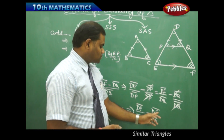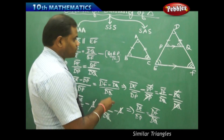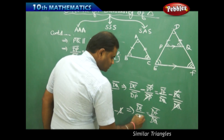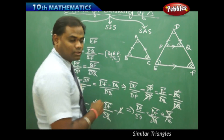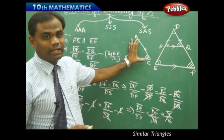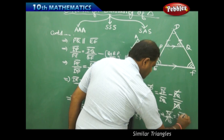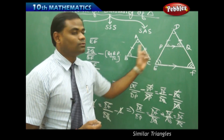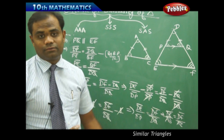Since DE/DP = DF/DQ, and we know DP equals AB (by construction), we substitute DP with AB to get DE/AB. Similarly, DQ equals AC, so we substitute to get DF/AC. Therefore DE/AB = DF/AC, and by interchanging numerators and denominators we arrive at the required ratio proving the sides are in the same ratio.